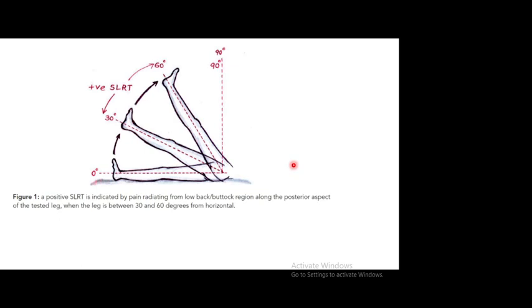Both tests indicate deep gluteal pain syndrome. No investigation is needed — even a spinal MRI cannot give you the diagnosis. Do not waste an MRI just because the patient has sciatica. Treatment is physiotherapy; a good physiotherapist can cure this condition, potentially resolving years of back pain in two weeks.